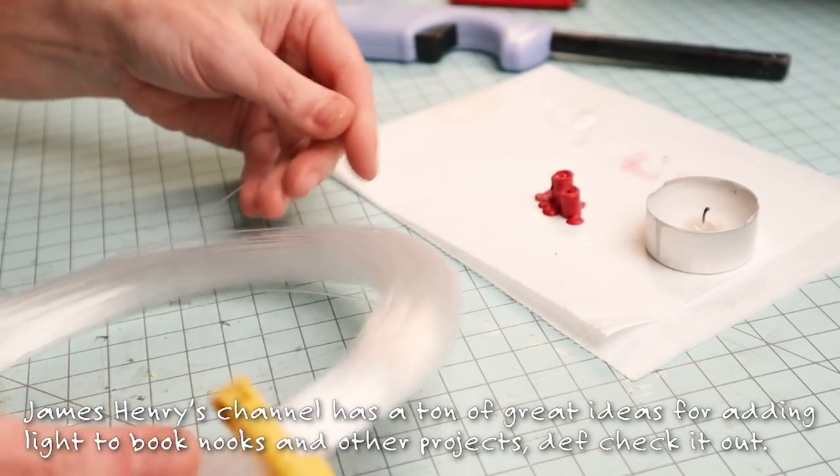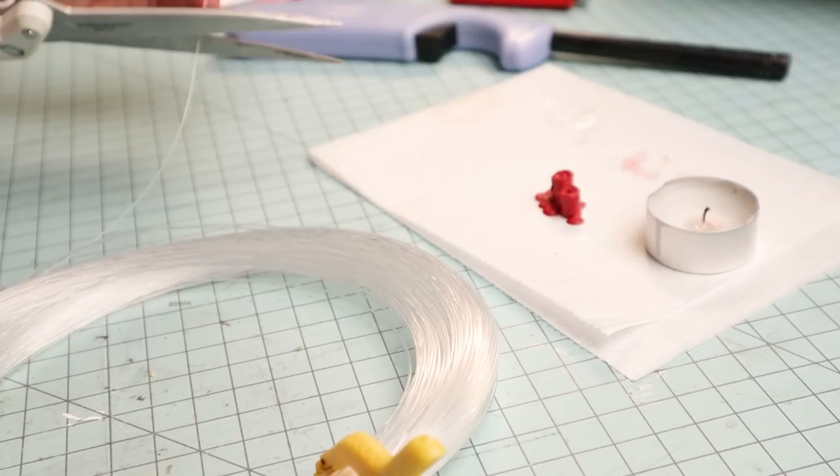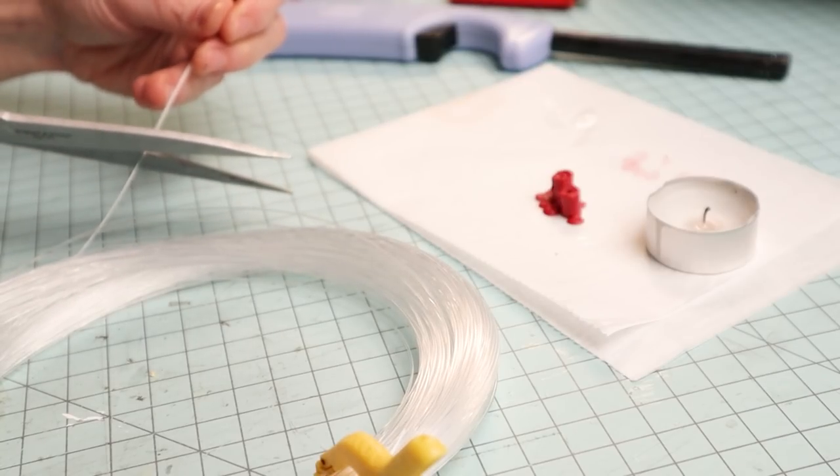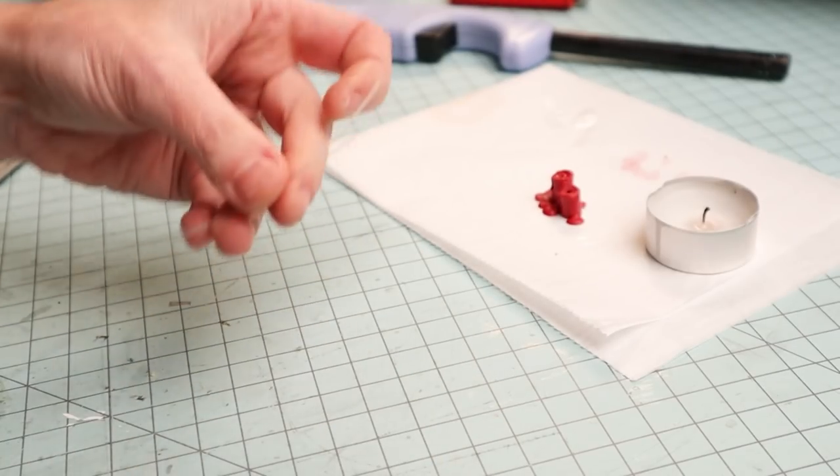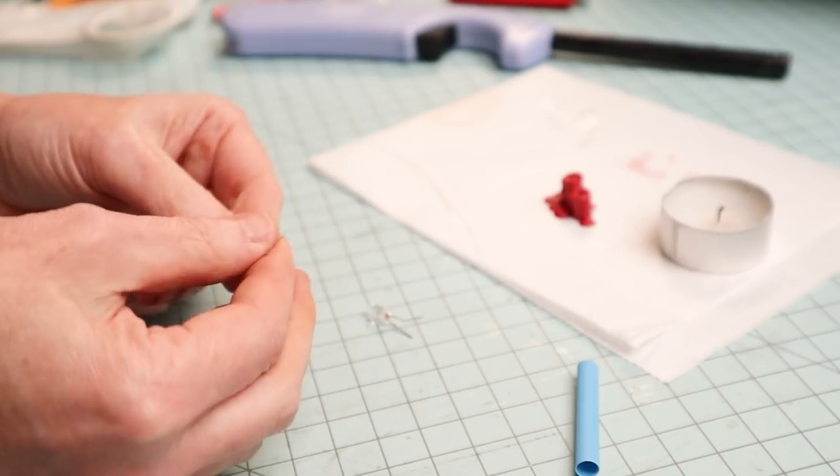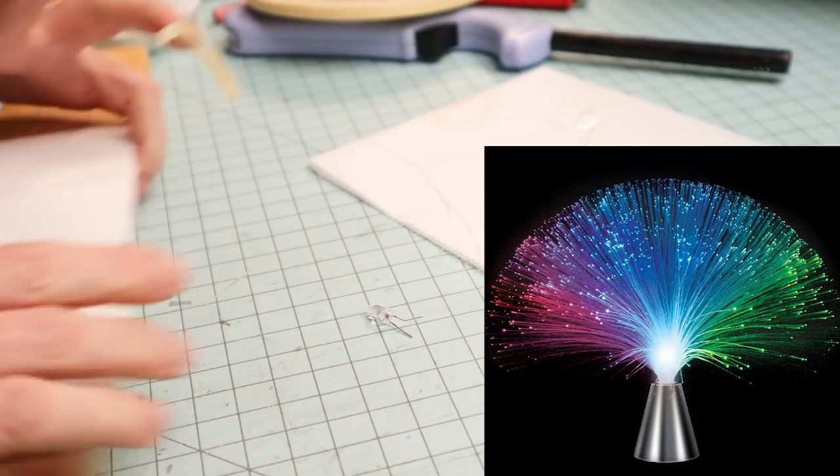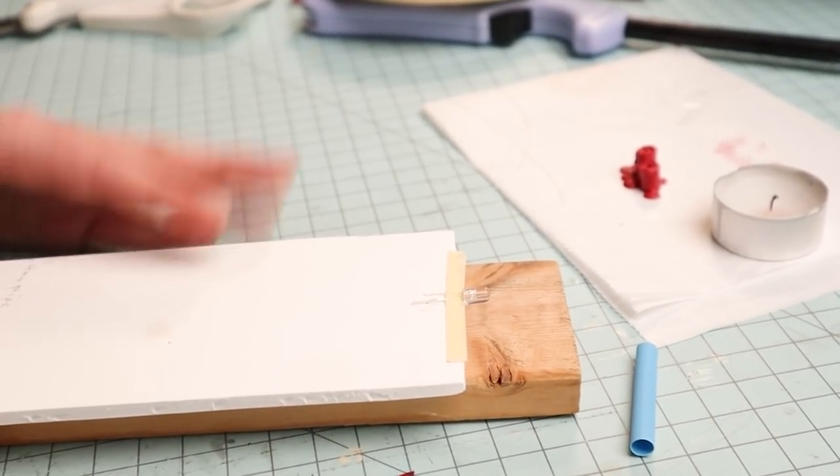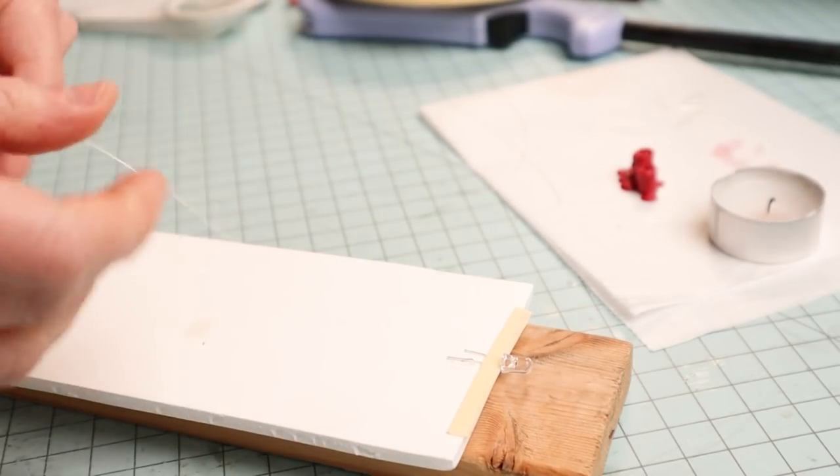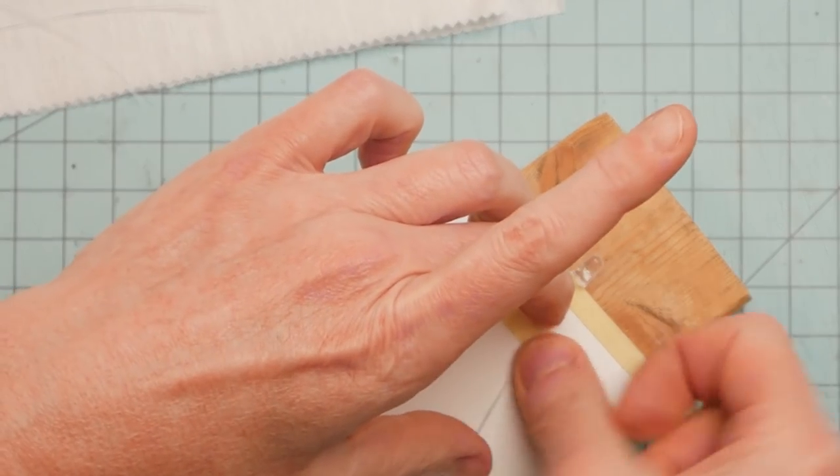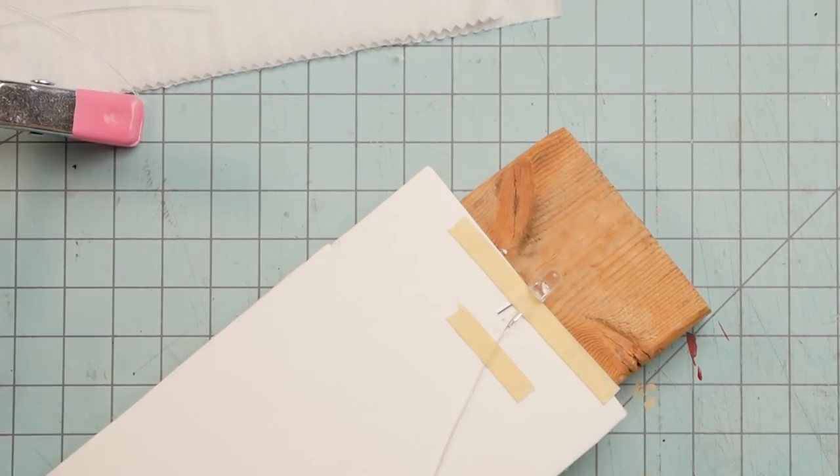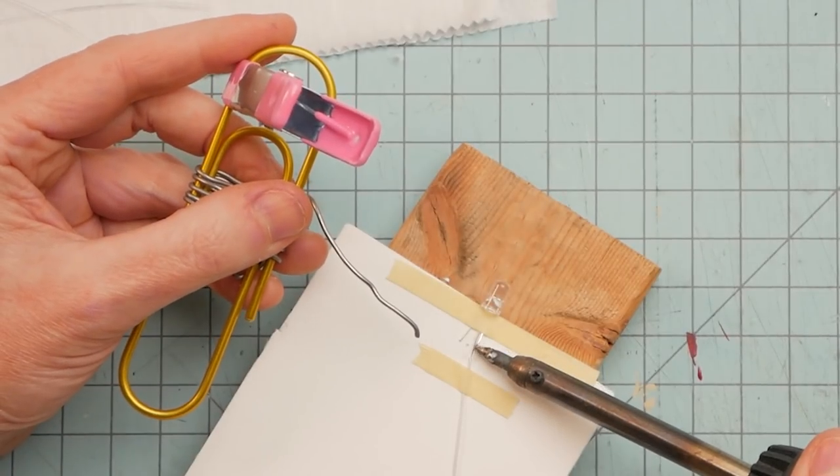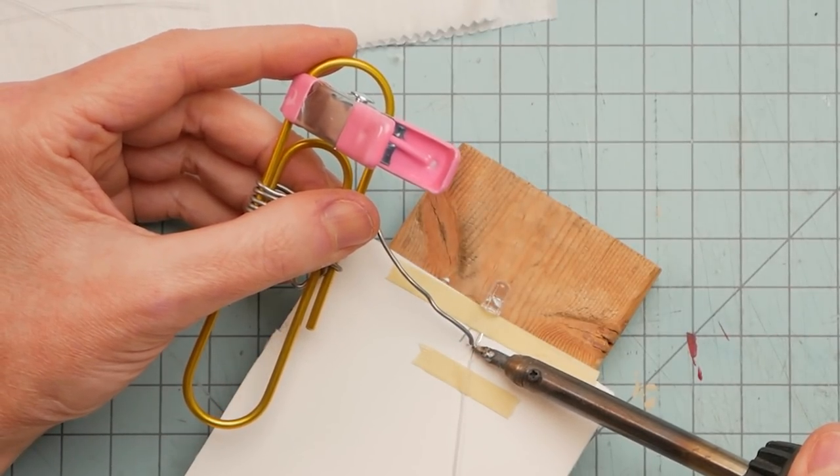And then for the glowing flickering wicks I used what James used to make his stars, which is this fiber optic filament. You might even have one of those fiber optic lamps in a closet or kids room where you could snip off a couple of strands. If not, you can always get some on Amazon. I think they sell links long enough to reach Uranus and back for like eight bucks.